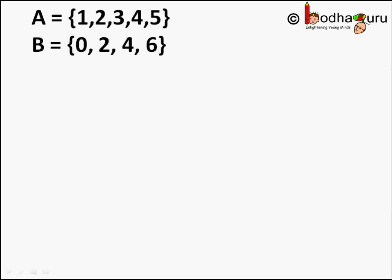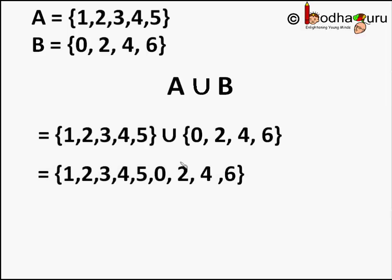Let us take another example. Set A has elements 1, 2, 3, 4 and 5, and set B has 0, 2, 4 and 6. So A union B would have elements of both the sets.